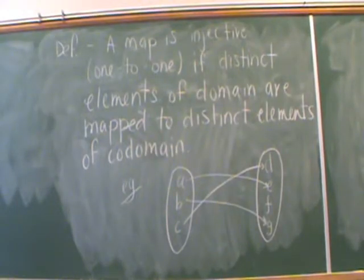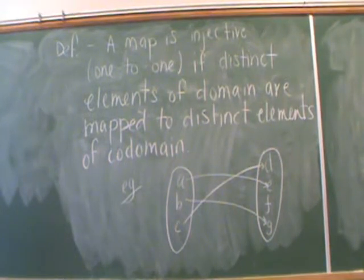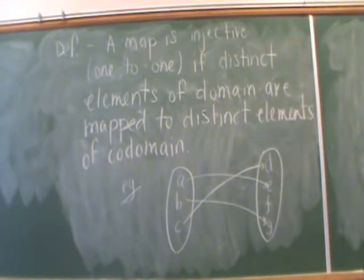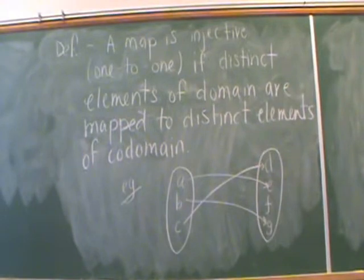A map is called injective if distinct elements of the domain are mapped to distinct elements of the codomain. Another way to say injective is one-to-one. Going back to our example where X is {A, B, C} and Y is {D, E, F, G}, that mapping was one-to-one — the distinct elements A, B, and C get mapped to distinct elements D, E, and G.